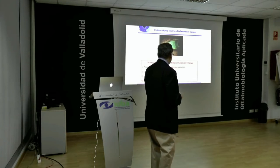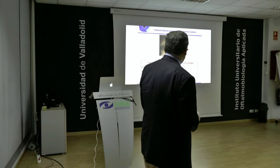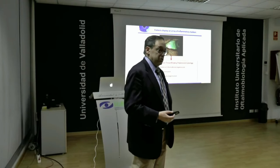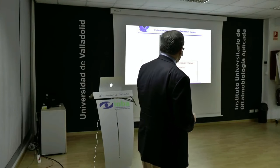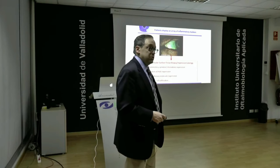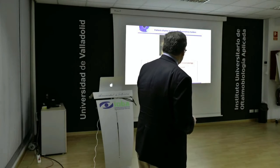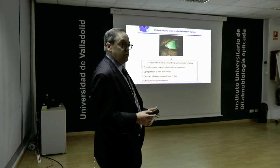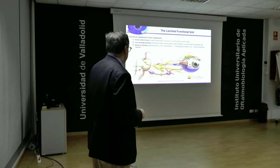Certain types of dry eye, in particular meibomian gland disease, are more prevalent in men. You can have systemic autoimmune disease — lupus, Sjogren's syndrome, rheumatoid arthritis — associated with very serious dry eye. But you don't have to have systemic autoimmunity; you can have a local autoimmune event. There may be no circulating autoantibodies in the patient's blood, but this is still autoimmunity. Many doctors say their patients don't have autoimmune disease, but they can have local autoimmunity — it is against self antigens, so it meets the definition of autoimmunity.